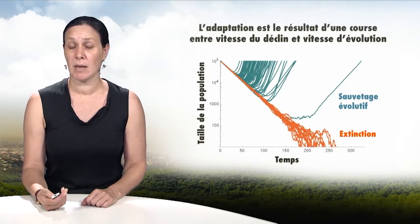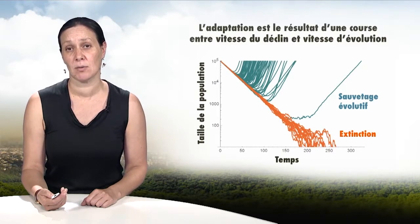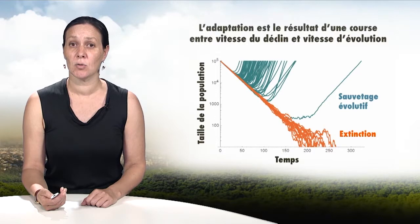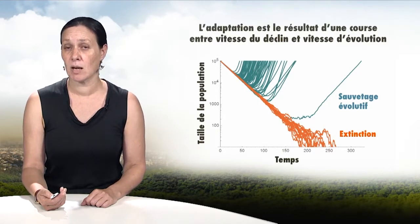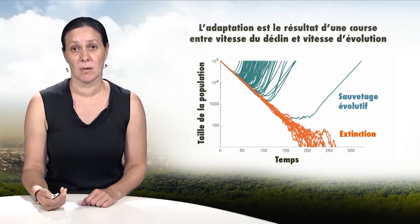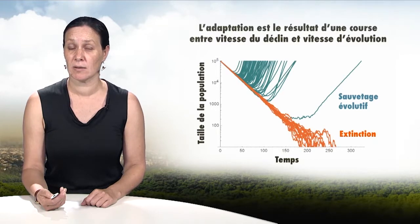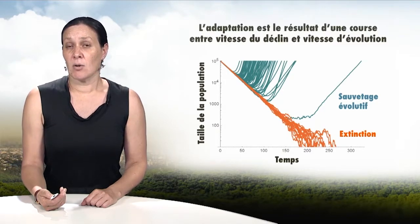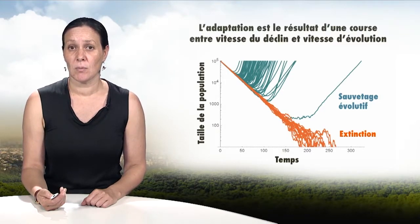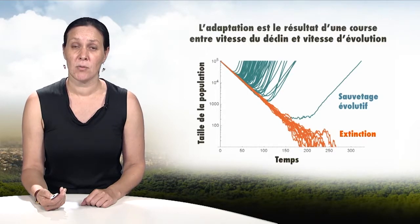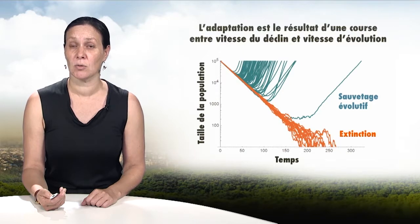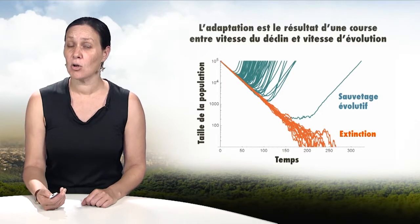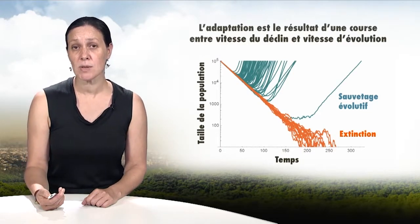The evolution of resistance in mosquitoes also allows us to better understand the limitations of genetic adaptation. A mutation must exist in the existing population, whether it appears locally or was introduced through migrations. Adaptation in a stressful environment, such as one subjected to pesticides, is the result of a race between the decline of a population and the speed of adaptation. A favourable gene must exist at a sufficient frequency — this is called evolutionary salvation.